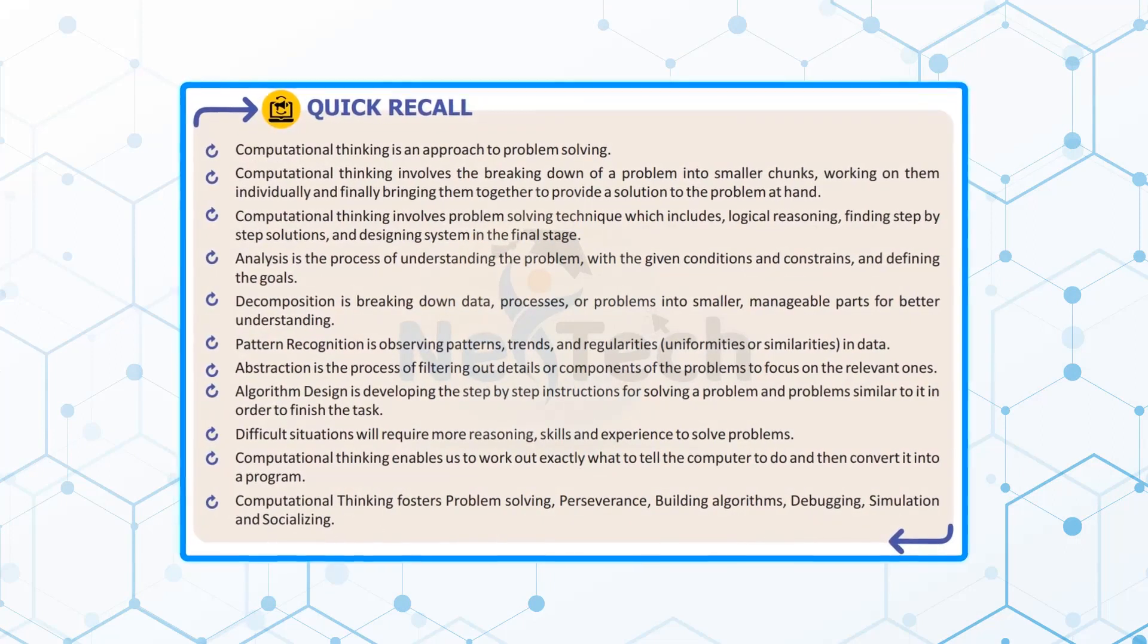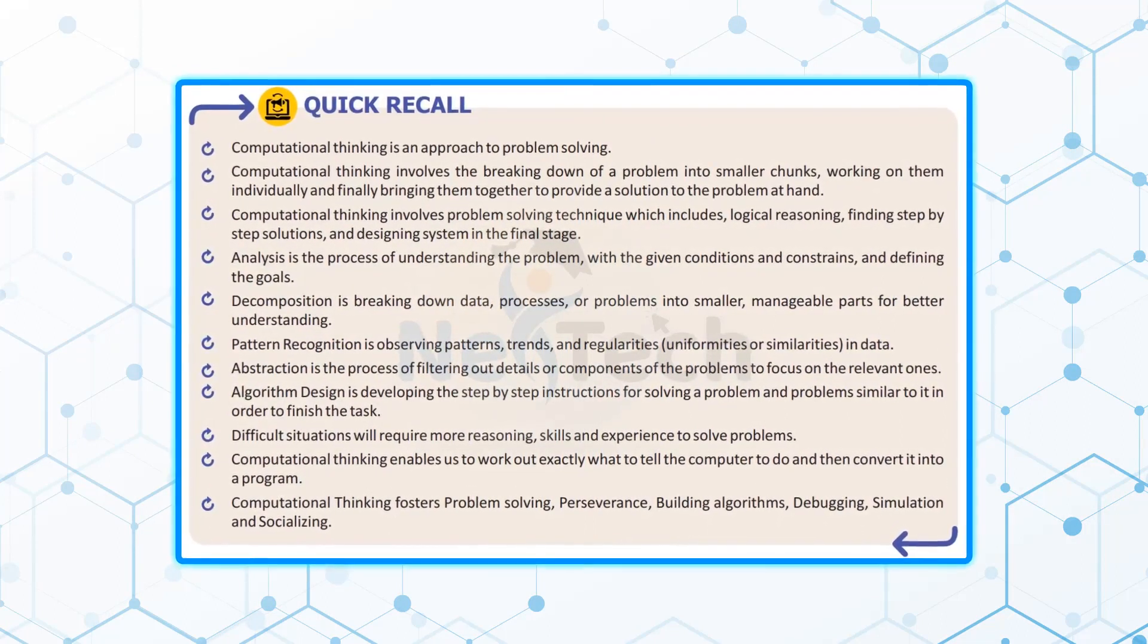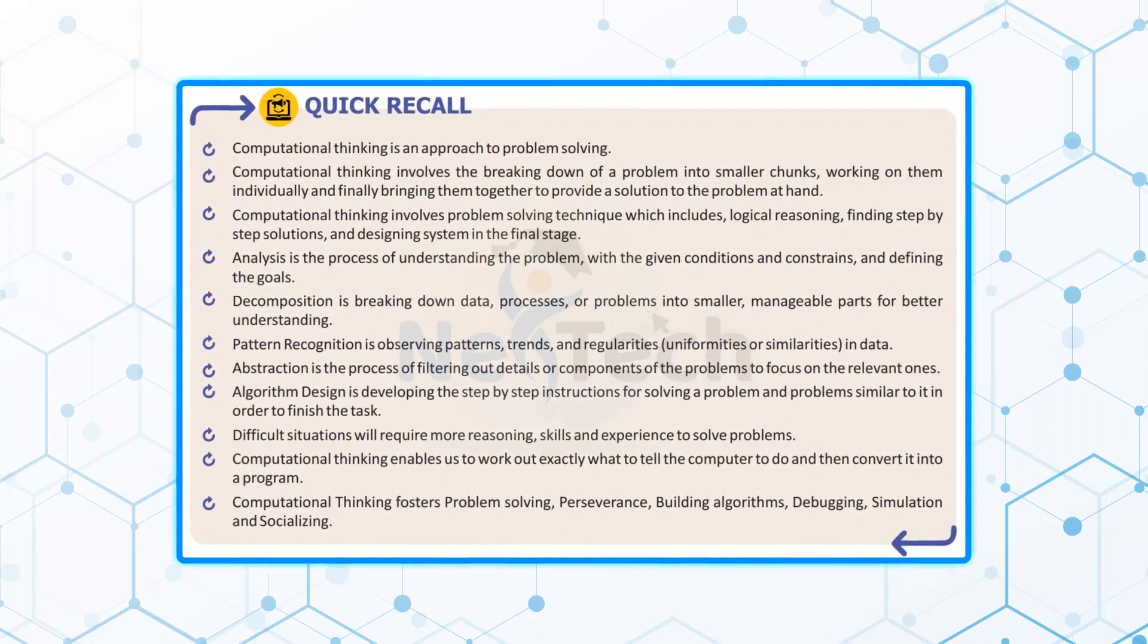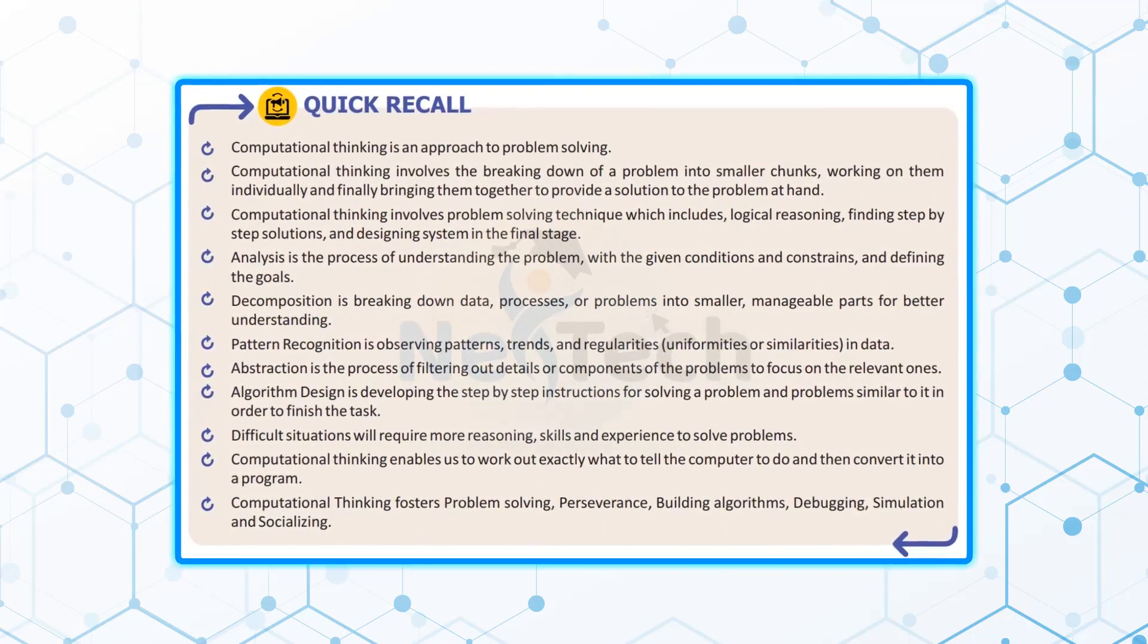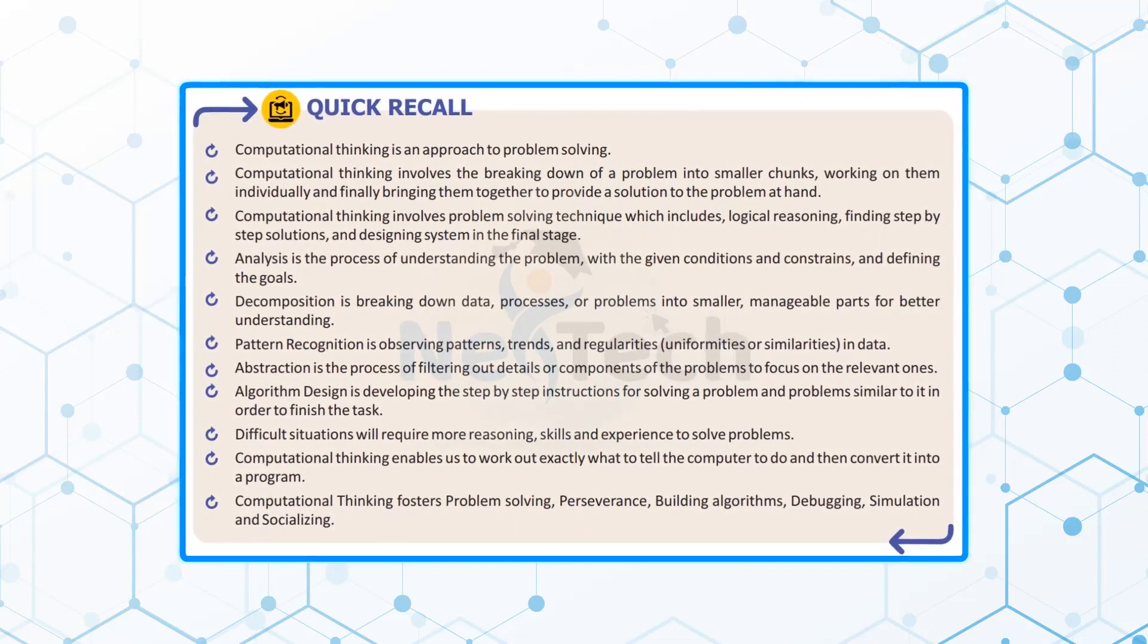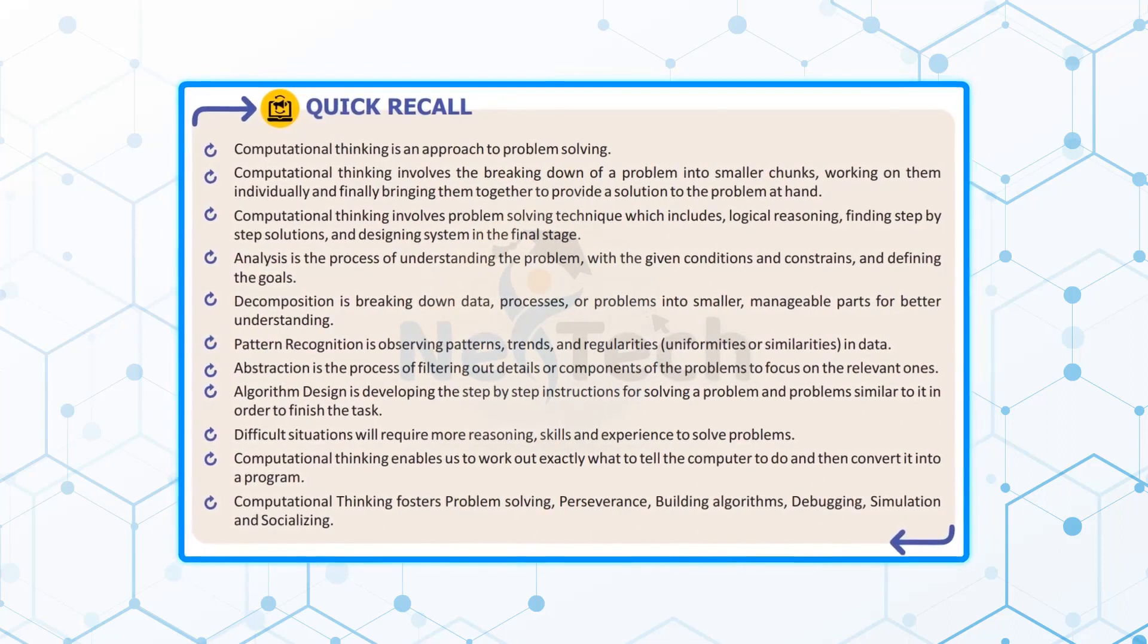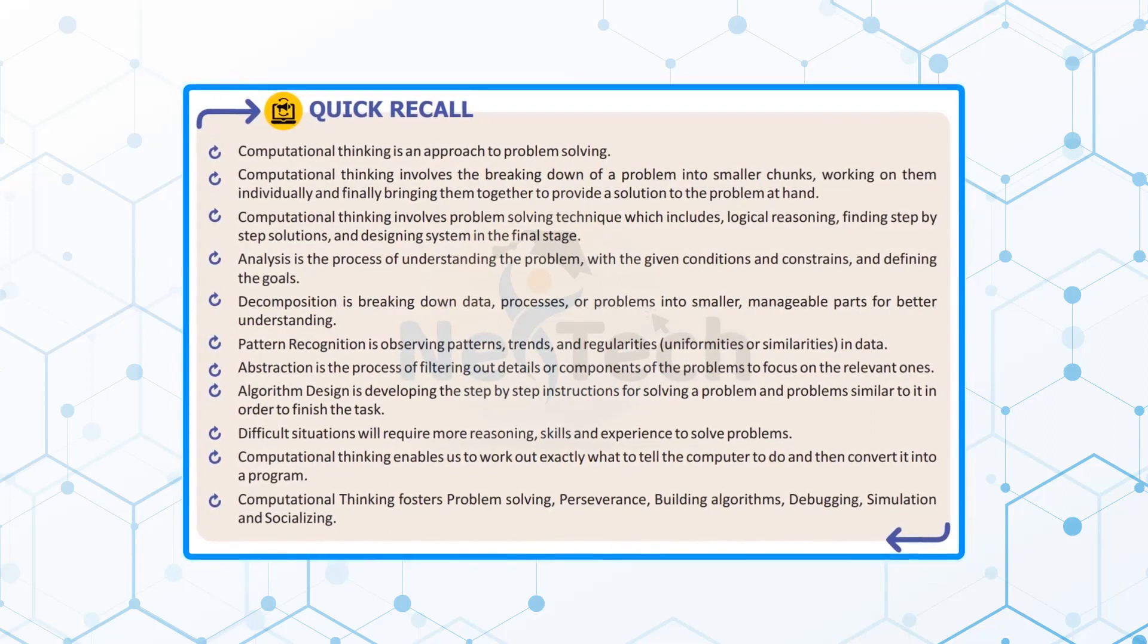Quick recall: Computational thinking is an approach to problem solving. Computational thinking involves the breaking down of a problem into smaller chunks, working on them individually and finally bringing them together to provide a solution to the problem at hand. Computational thinking involves problem solving technique which includes logical reasoning, finding step-by-step solutions and designing system in the final stage. Analysis is the process of understanding the problem with the given conditions and constraints and defining the goals. Decomposition is breaking down data, processes or problems into smaller, manageable parts for better understanding. Pattern recognition is observing patterns, trends and regularities, uniformities or similarities in data.